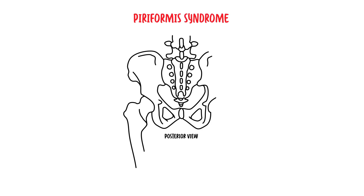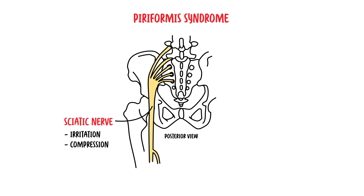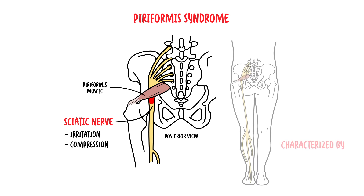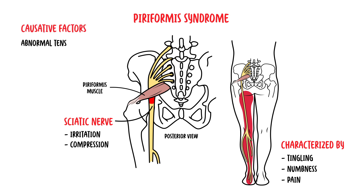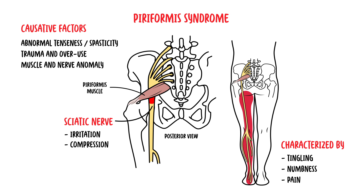Piriformis syndrome is caused by irritation or compression of the sciatic nerve at the piriformis muscle. This syndrome is characterized by tingling, numbness and pain along the path of the sciatic nerve in the affected leg — basically sciatica symptoms. The causative factors include an abnormal tenseness or spasticity of the piriformis caused either by trauma and overuse, or by muscle and nerve anatomical anomalies.